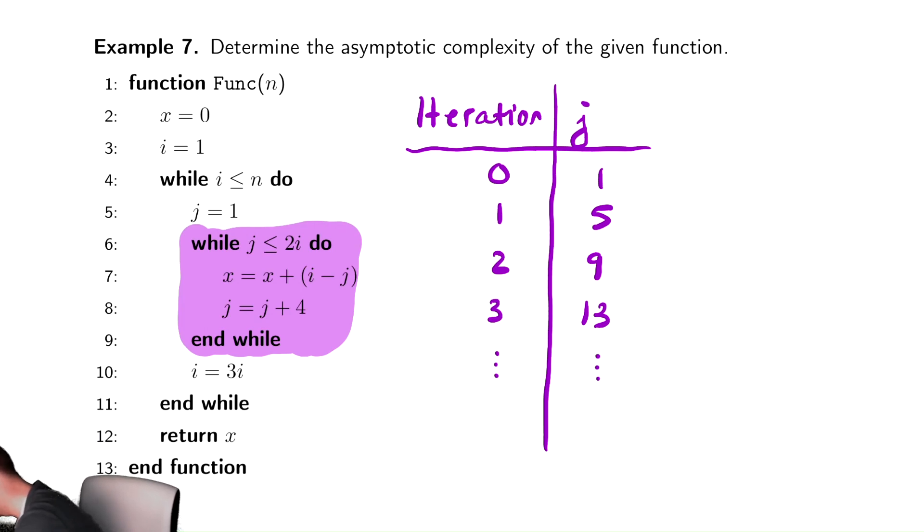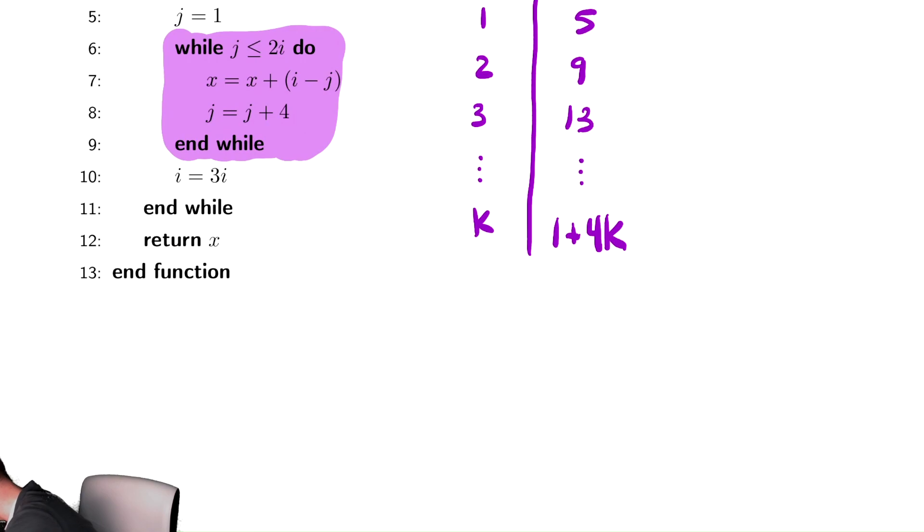But if I stare at that for long enough, maybe you go, hey, that looks a lot like one plus four K, which again should be unsurprising. We're continually adding. It looks like multiplication, therefore. And we want to figure out when does this stop? Well, this stops when that generic expression one plus four times K is equal to our stopping condition.